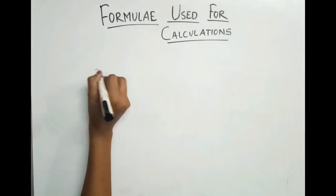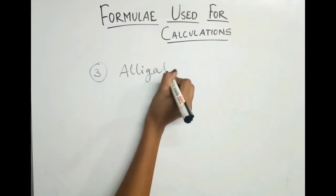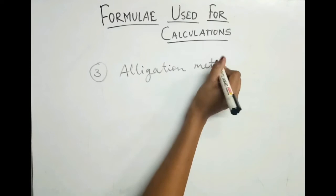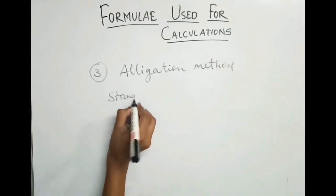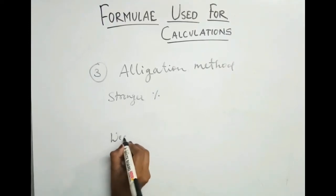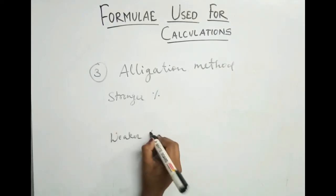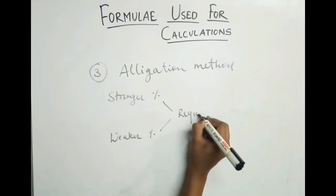Third is the allegation method. Stronger percent, weaker percent, required percent.